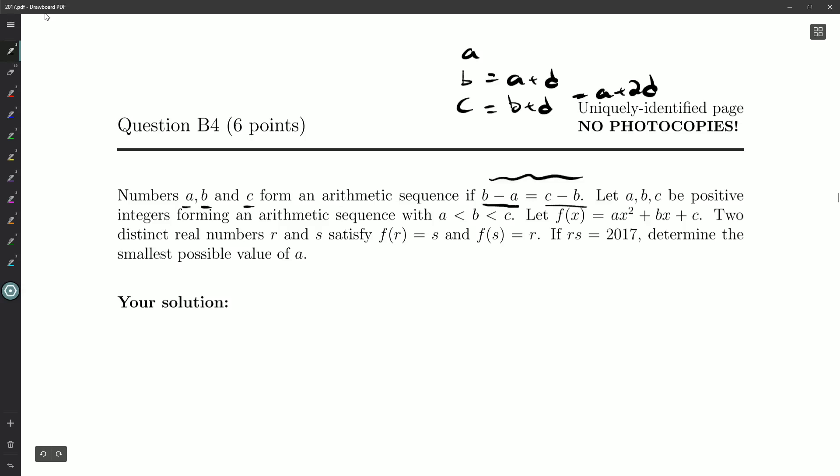Let A, B and C be positive integers forming an arithmetic sequence with A less than B less than C. So it's definitely an increasing sequence. Let F of X be a quadratic with coefficients A, B and C. Two distinct real numbers R and S satisfy F of R is equal to S and F of S is equal to R. And we're also told RS is equal to 2017 and we want to determine the smallest possible value of A. Now A is a positive integer just like B and C are so that might come into consideration.